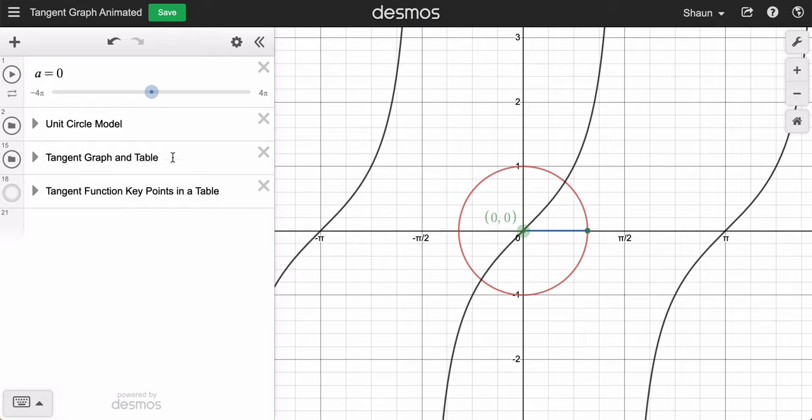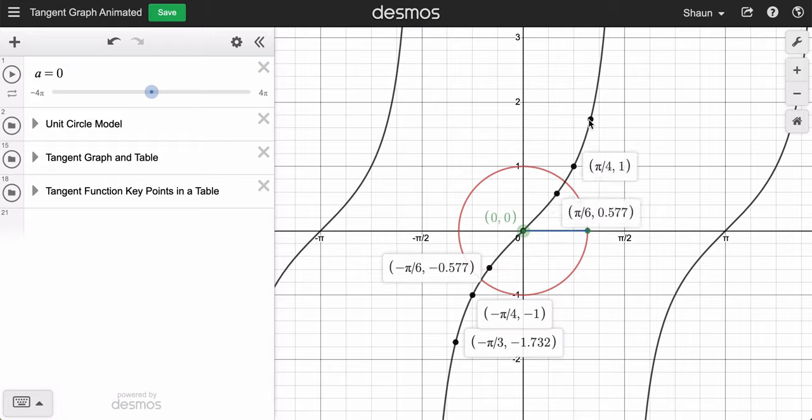Now in the sample Desmos graph I'm giving you, I'm including those values. Here they are, so set those points up. Here you can see them. Or click through, and these values connect to your unit circle.